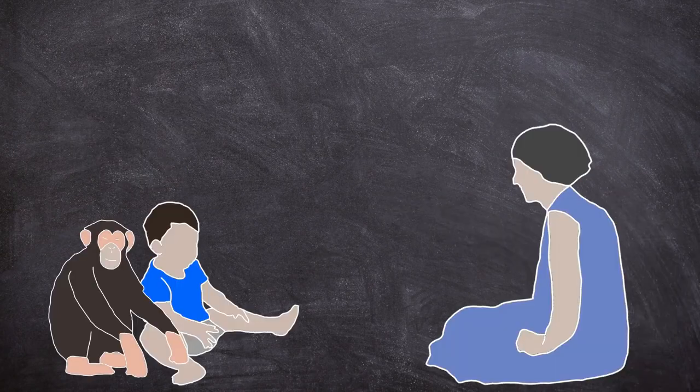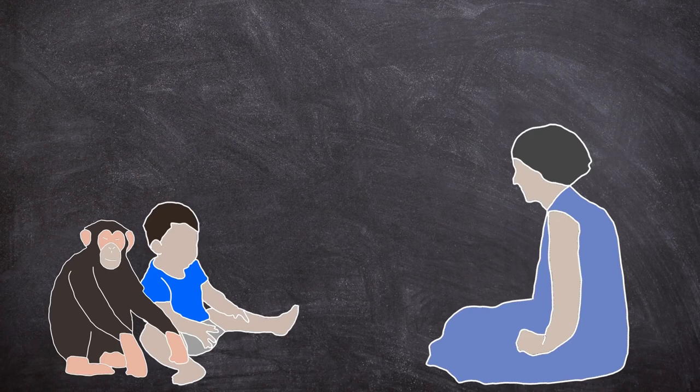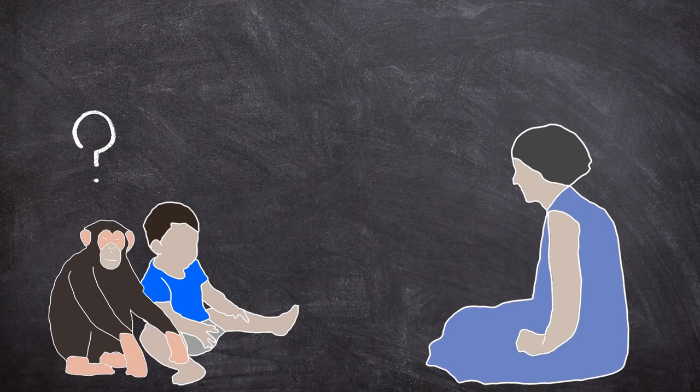The experimenters attempted to teach both how to play pattycake. Donald picked it up rather quickly and with little prompts happily followed the game. Gua, on the other hand, never learned how to play properly even though she was given daily opportunities to practice.